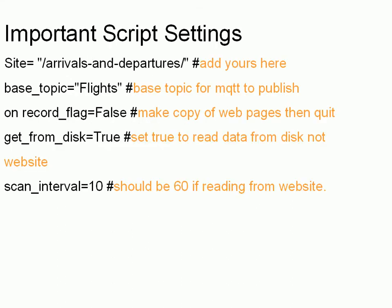These are the important script settings. The first is the site — where you get the arrivals and departure information from. The base topic is what you're publishing out onto MQTT. There's a record flag: if you set it to true, the script goes to the airline server, reads the data, copies it to disk every minute, and after 60 minutes it quits.